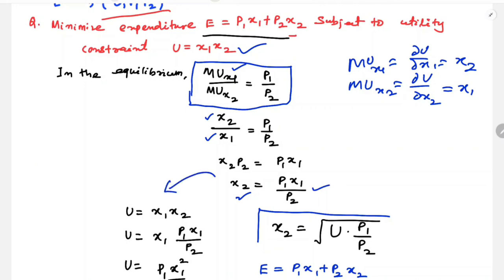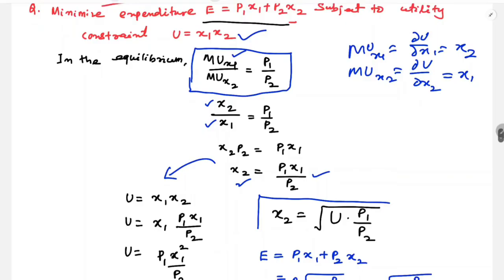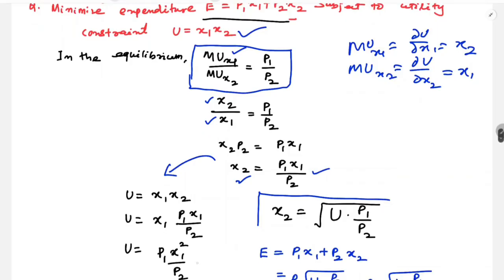Using the utility function U = X1·X2, and substituting X2 = P1·X1 / P2 into the constraint, we get U = P1·X1² / P2.